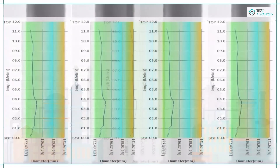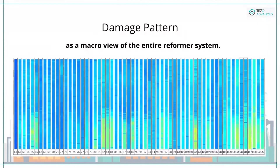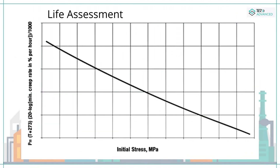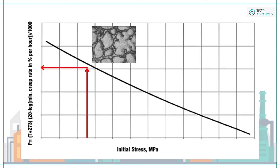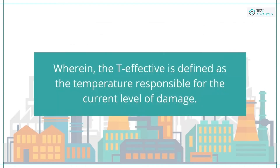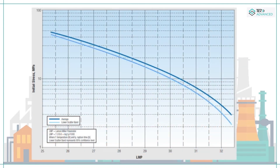RTS provides diameter profiles throughout the length of each tube and hence the creep strain for each tube in the reformer, along with a macro view of the entire reformer system for corrective actions. For life assessment, it is of utmost importance to determine the effective tube metal temperature (T-effective) from the classified curves of strain versus stress, which is further adjusted for different microstructural conditions based on a proprietary database integrated with ultrasound attenuation references.